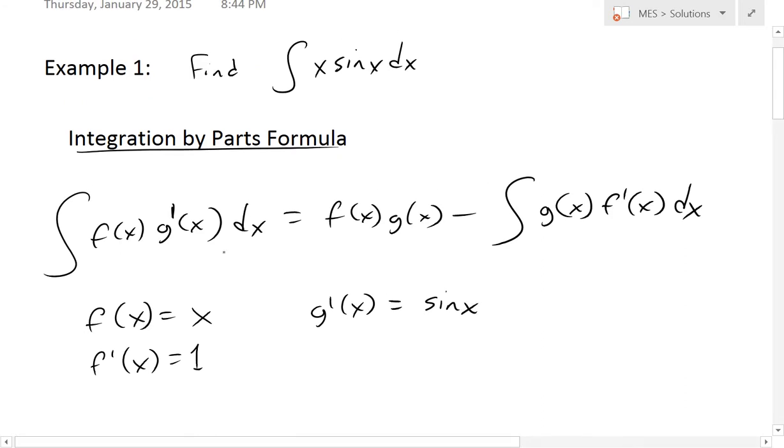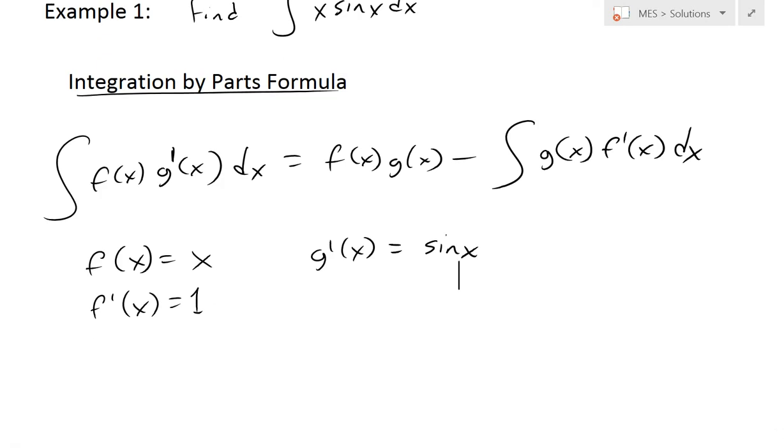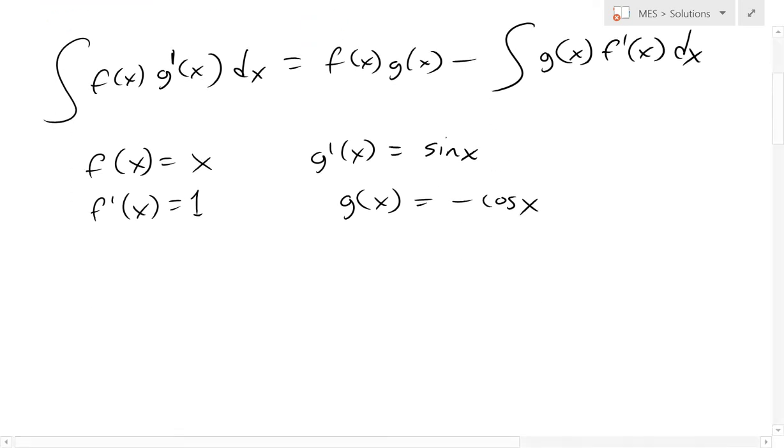Because we selected this, g'(x) is going to be equal to sin(x), and we can just plug this in. When we selected this, we also have to make sure we can take the integral of this. The integral of sin(x) equals negative cos(x). You can double check: the derivative of cos is negative sin(x), and it cancels.